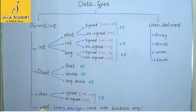The next and last primitive data type is void data type. It is also known as an empty data type and is not used with variables or constants — it is used with functions only. We cannot use the void data type with identifiers other than function names. Those were the primitive data types.